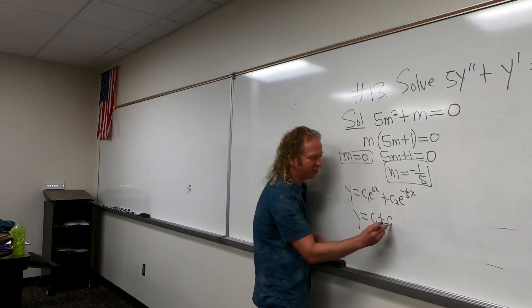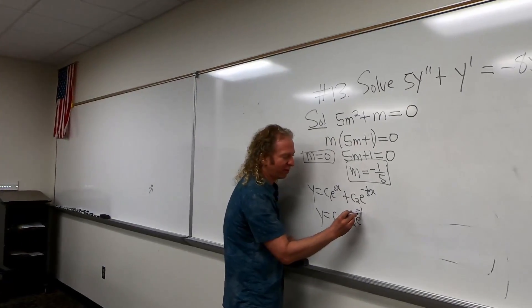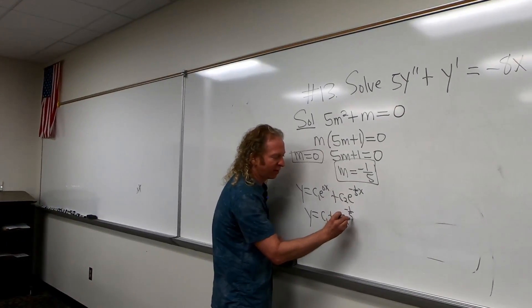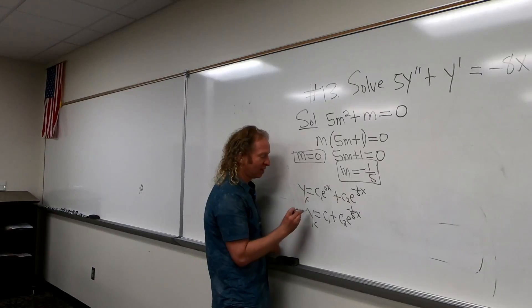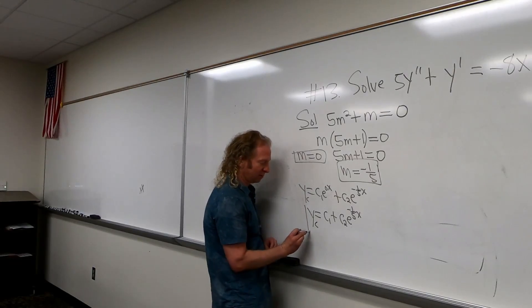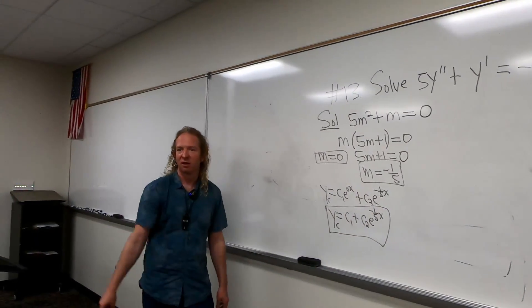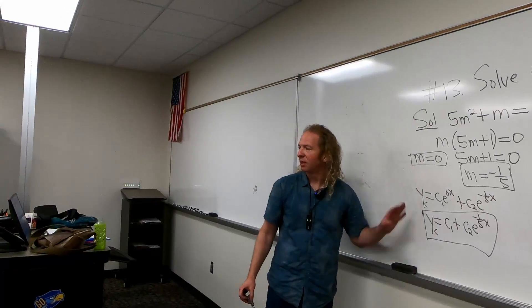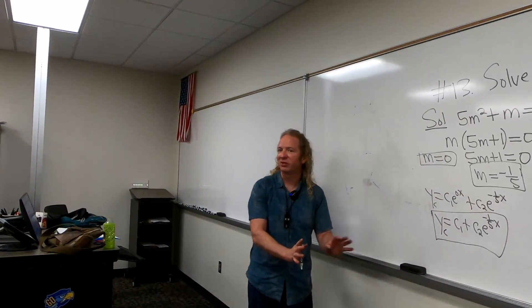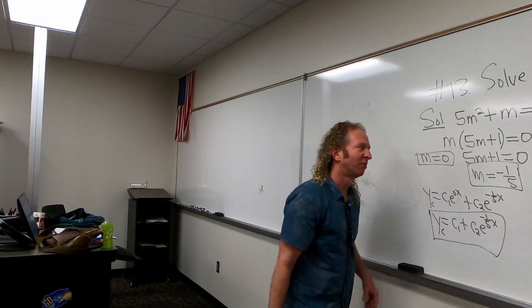Plus C2 e to the negative 1/5 x. So this is Yc. I'm going to put this in a box, just to keep it organized.